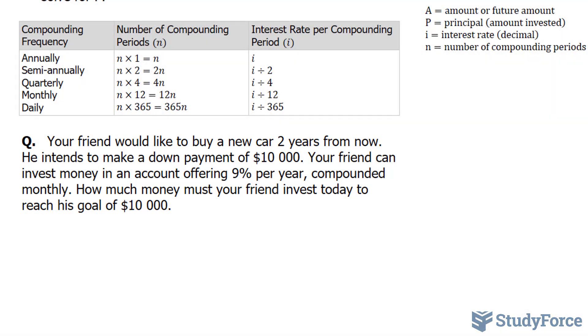We know that this person wants to buy in 2 years, and that relates to N, which is the number of compounding periods. We're also told that the interest will be compounded monthly. So to calculate our N, we have to use this chart. And since it is being compounded monthly, we have to multiply the number of years, which is 2, by 12.